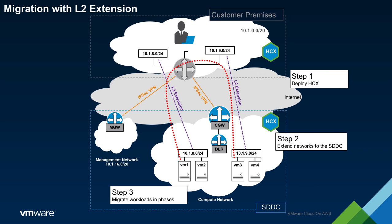When planning this type of migration, it is critical to keep traffic flows in mind in order to minimize the tromboning effect. We can now see that all workloads have been migrated to the SDDC. As such, we are now free to proceed to the next phase of the migration.